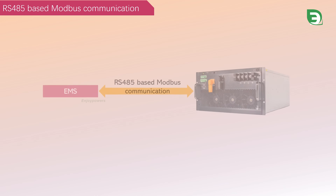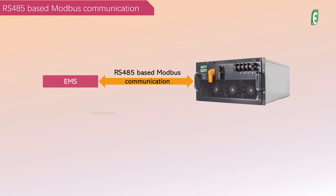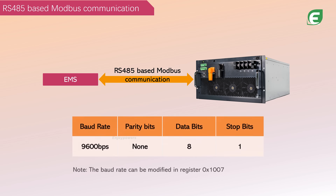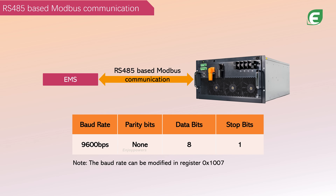EnjoyPower's PCS employs RS-485-based Modbus communication, with a default baud rate of 9600, a parameter that can be modified within the registers. Additionally, the Modbus address is set using DIP switches.